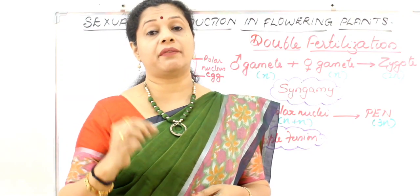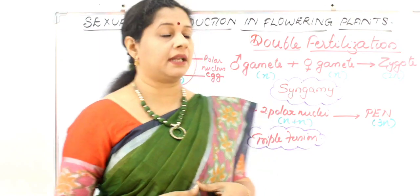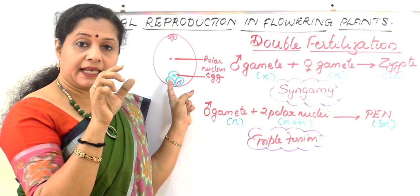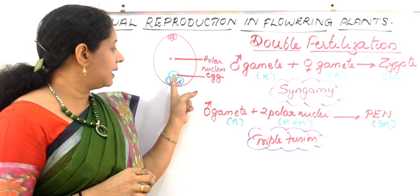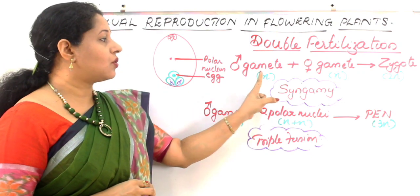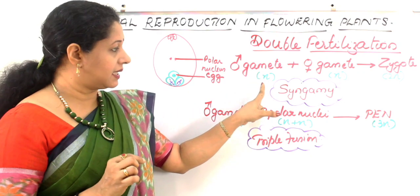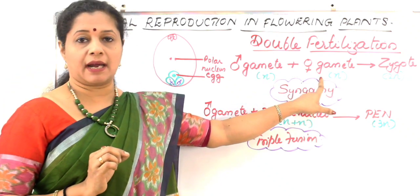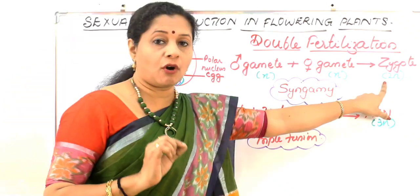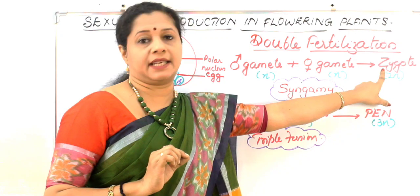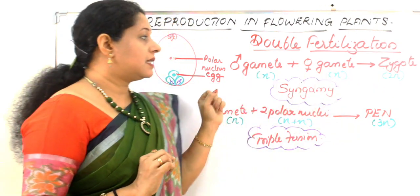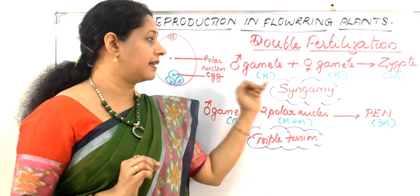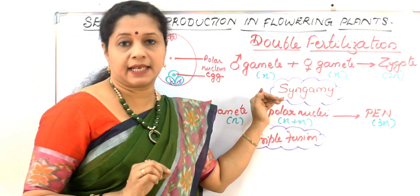Once the pollen enters through the synergid, it releases the male gametes. The first male gamete, which is haploid (N), fuses with the female gamete, which is also haploid, to form a diploid cell called a zygote. This is the usual fertilization occurring in all sexually reproducing organisms and is otherwise called syngamy.